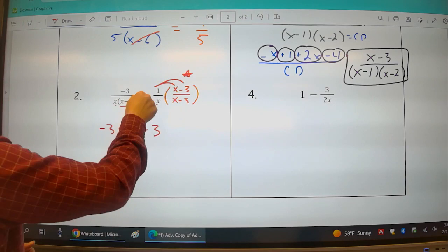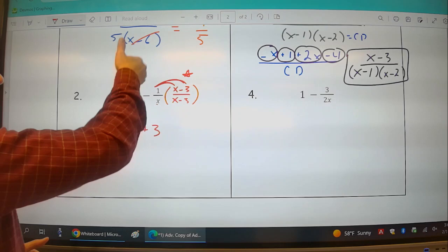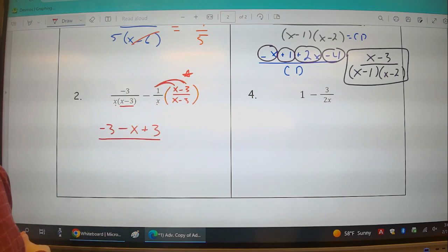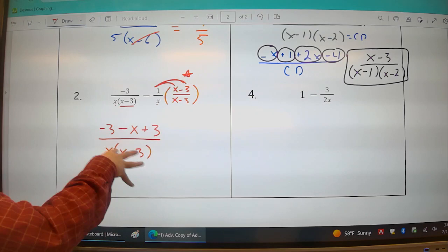1 times x is x, so minus x. 1 times minus 3 is minus 3. And if we're subtracting negative 3 times x minus 3, it's plus over my common denominator x times x minus 3.